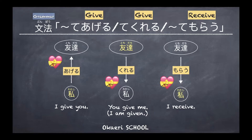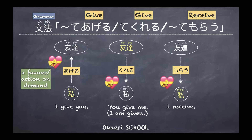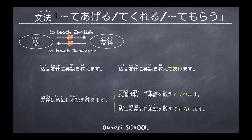This time it's not about a direct object like chocolate or a physical present that moves between me and a friend. This time it's more about a favor or an action — when you ask someone to do something, or when they ask you to do something. In these situations, we use te-form verbs plus ageru, kureru, or morau. So instead of things, we talk about a favor, an action, or a service.